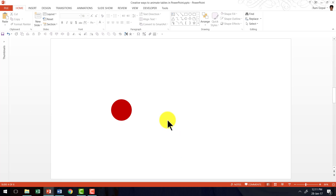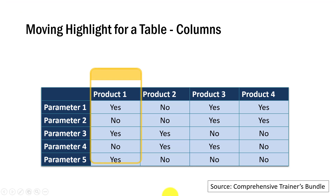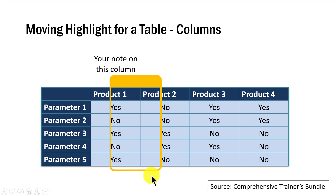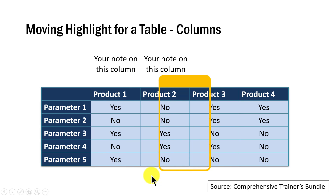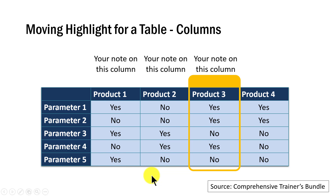That is all there is. Because if you think about it, point A is where the emphasis starts, then from A it goes to B, and from B it goes to C. So the technique is just the same. I am going to show you how to create that A to B, B to C movement using a simple red dot.